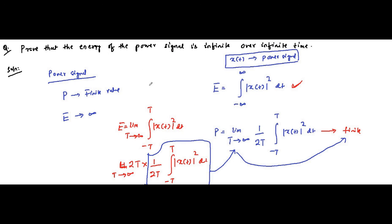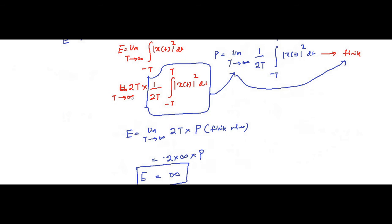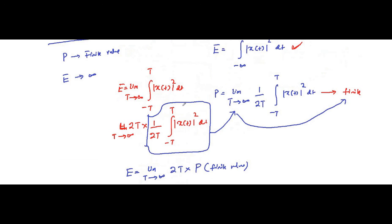The same technique was used for both proofs: for proving that the power of the energy signal is zero, and for proving that the energy of the power signal is infinite. It is just about writing the expression in different ways without changing its meaning or value. You have to be thorough about the properties of energy and power signals, their expressions, and how to modify them — such as multiplying by 2T and dividing by 2T — and be familiar with the values they represent.